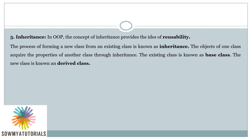Next is inheritance. Inheritance is a process of acquiring the properties of one object by another object. In object oriented programming, inheritance provides the idea of reusability. The process of forming a new class from an existing class is called inheritance. The existing class is called the base class, also known as the super class or parent class. The new class is called the derived class, also known as the sub class or child class.